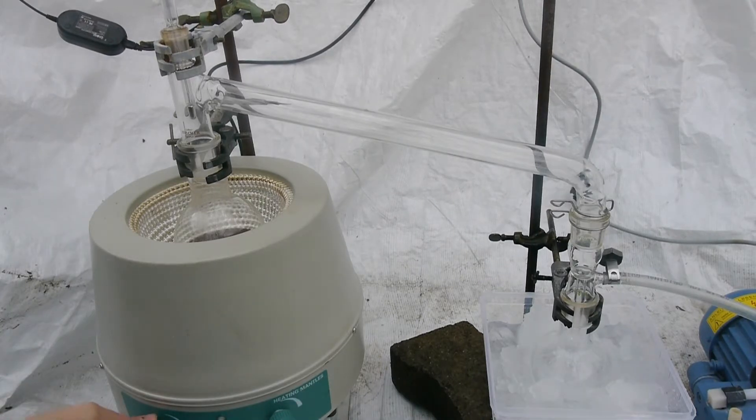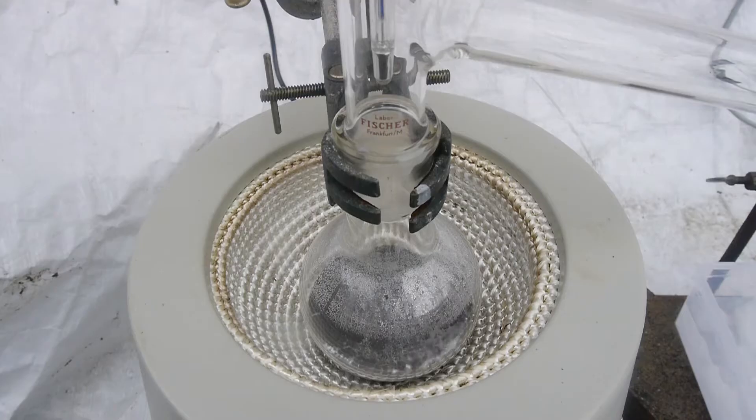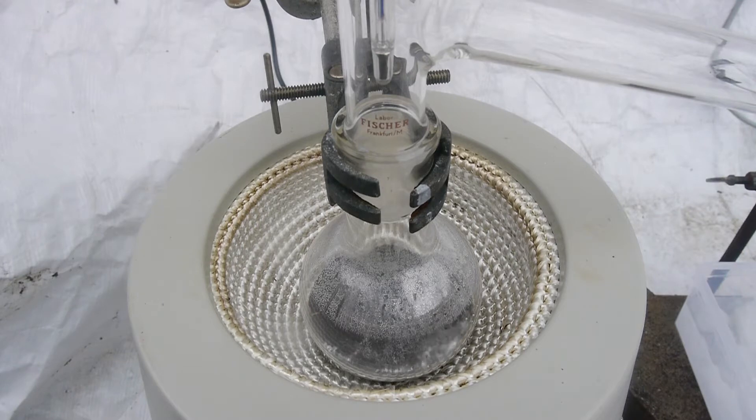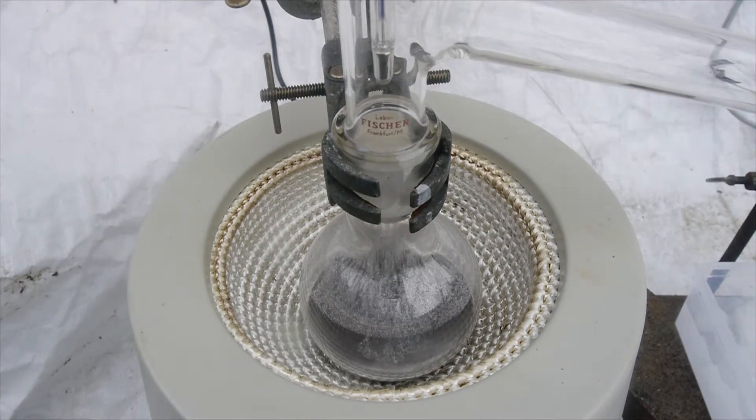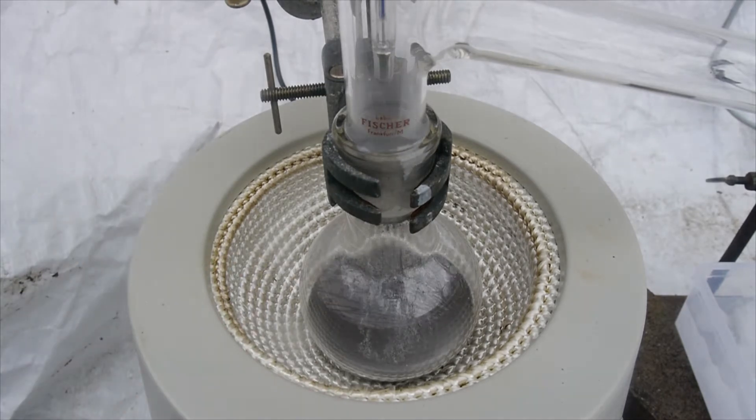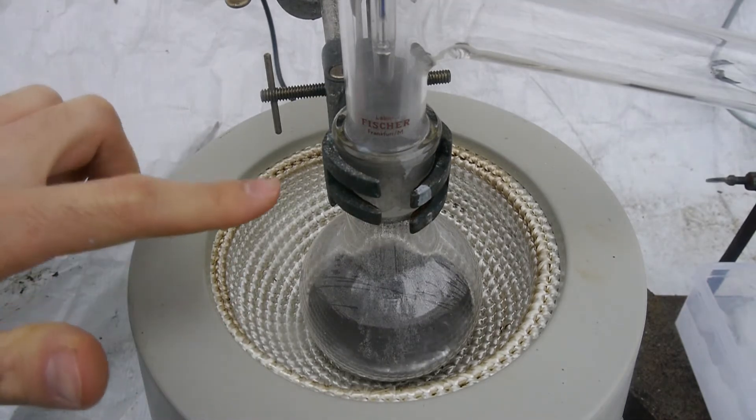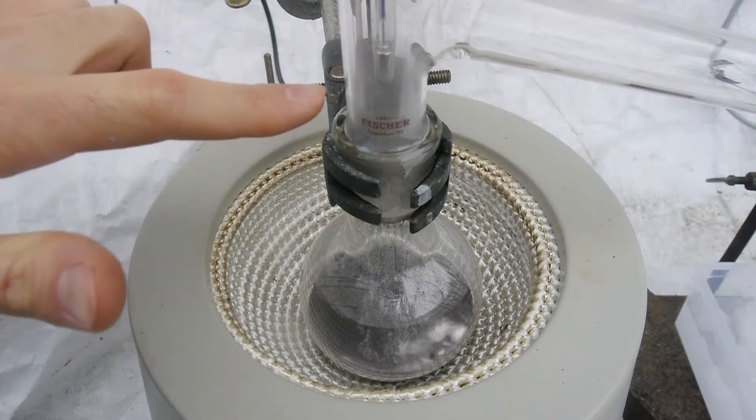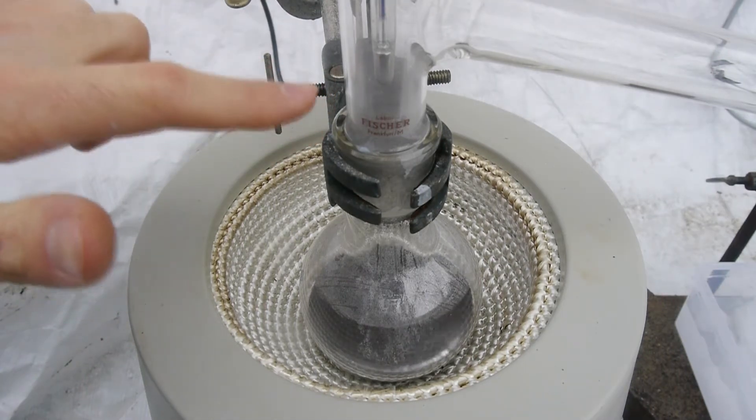Now let's turn the heat to full blast and hope this will distill over without any incidents. Looks like we are slowly approaching the boiling point of mercury now. Now we can very slowly see the invisible vapor front of mercury rising by the drop that's condensing up here in the glass.